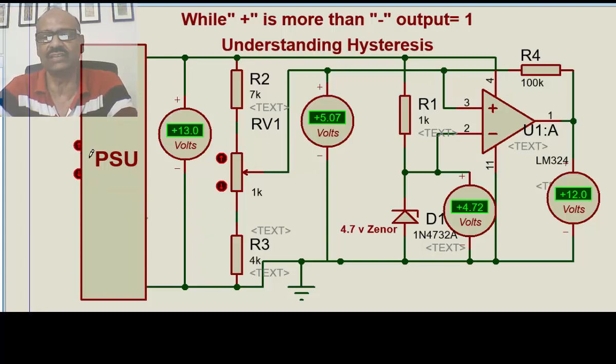It takes a long voltage in the input to change back to the output to high. It is only when there is a 1 volt change here, then only the output goes high. So, this is what we call hysteresis.